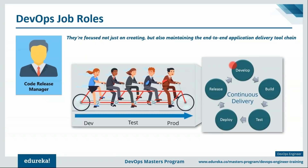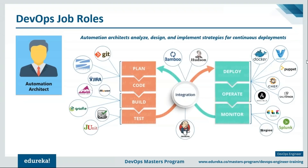The code release manager — whether called release manager, release engineer, or product stability manager — focuses on management and coordination of the product from development through production. Release managers oversee the coordination, integration, and flow of development, testing, and deployment to support continuous delivery, focusing not just on creating but also maintaining the end-to-end application delivery tool chain.